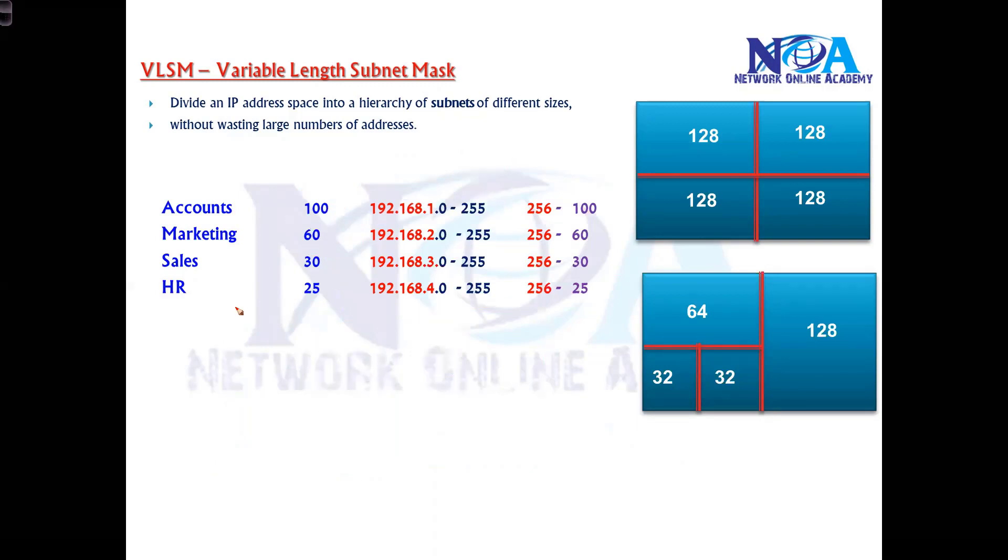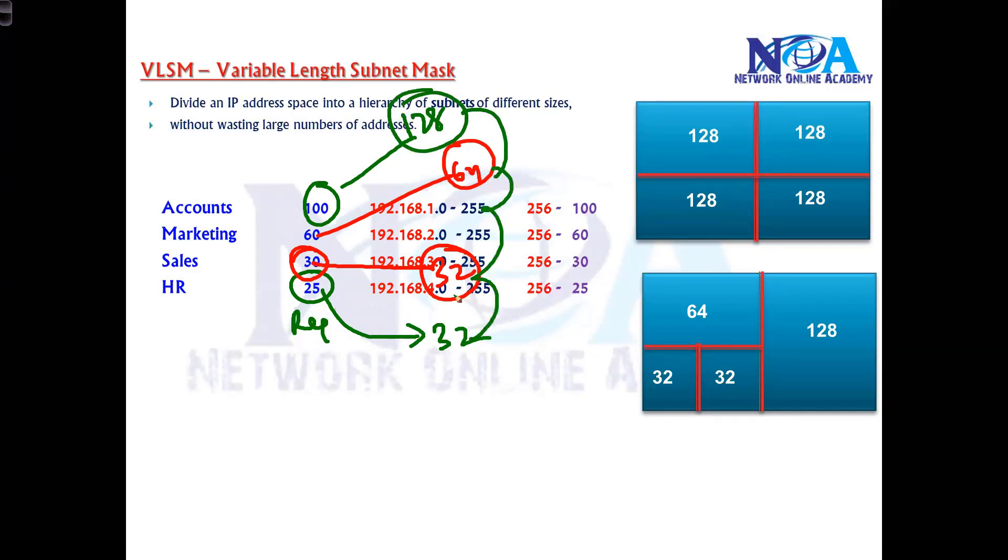In subnetting, we're dividing in variable sizes - depending upon the requirement, we allocate the nearest possible size. The sizes may be the same or may not be the same.